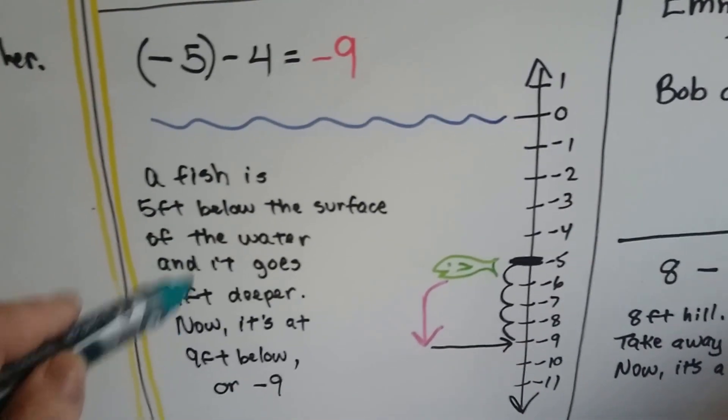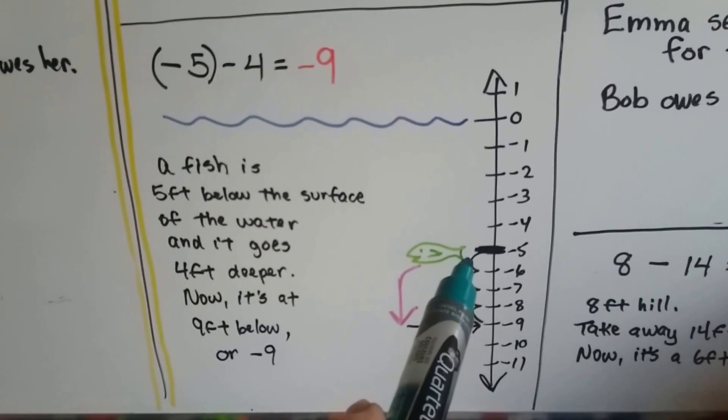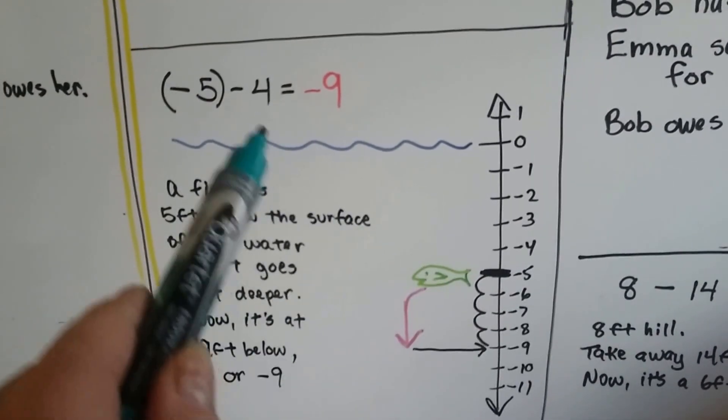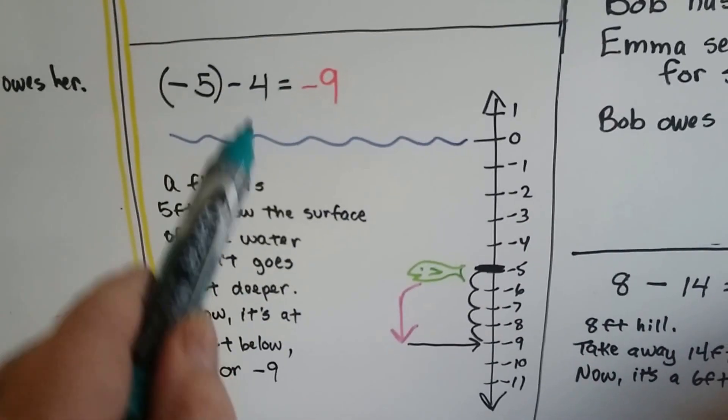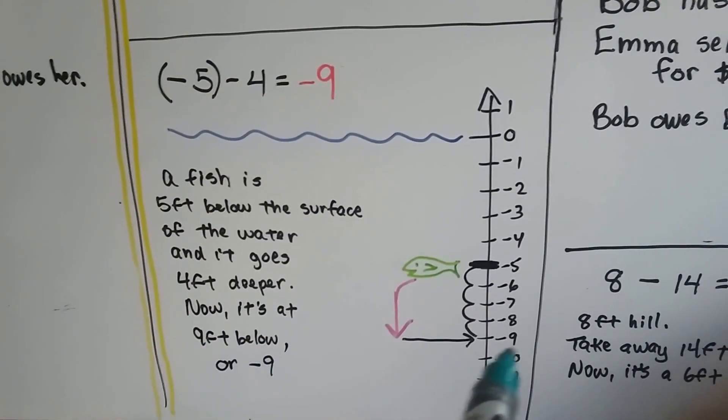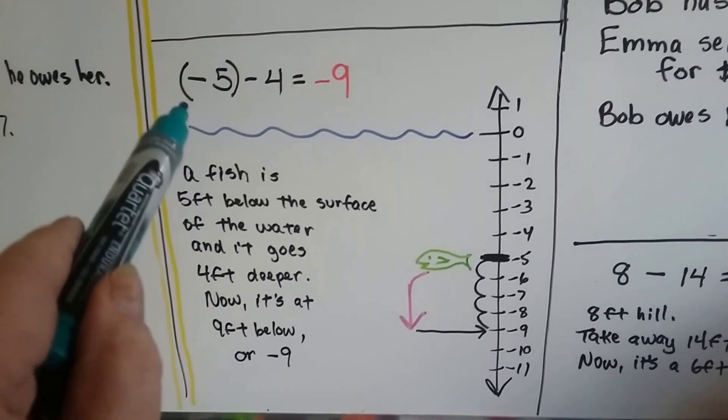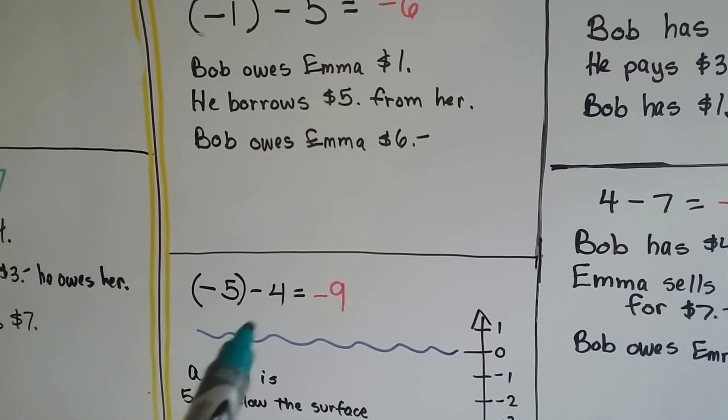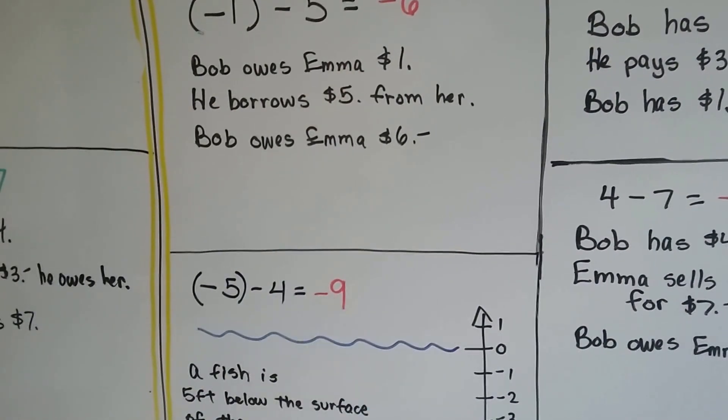I thought we'd do fish on this one. There's a fish that's 5 feet below the surface of the water. It's way down here. And it's going to dive another 4 feet. Now it's 9 feet below the water. It would almost be the same as Bob and this one. If Bob owed Emma $5 and he borrowed another $4, now he's $9 in debt.